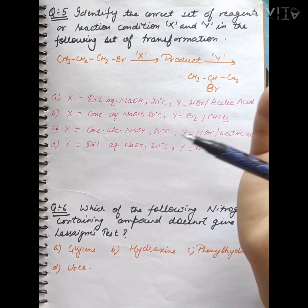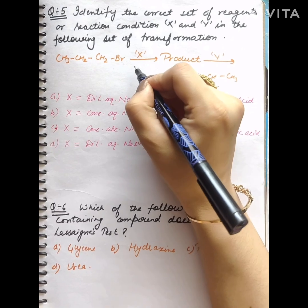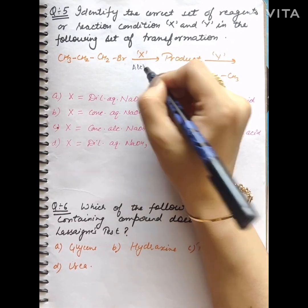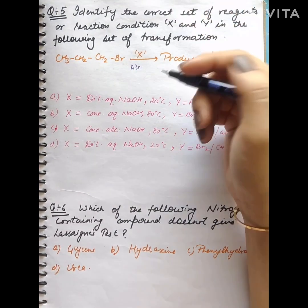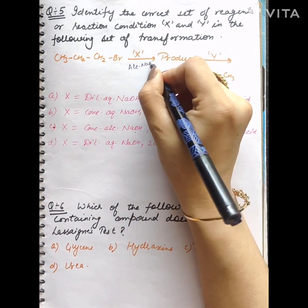so that it comes to double bond. Then you have Markovnikov or anti-Markovnikov's rule. Here X will be alcoholic NaOH. Here you have to know that the option is C,